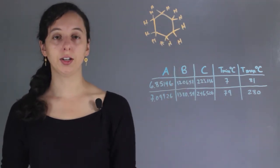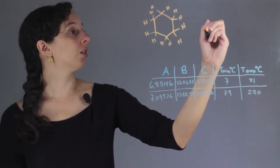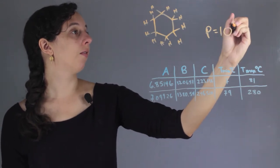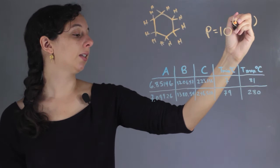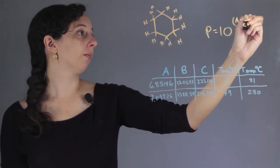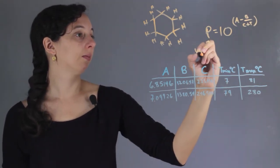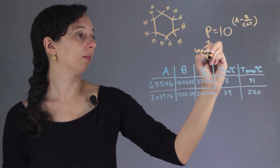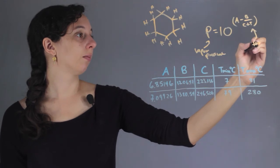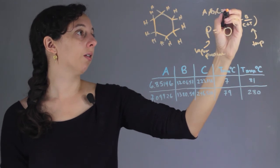The Antoine equation is used for determining vapor pressure, and the equation itself looks like this: P, vapor pressure, equals 10 to the exponent A minus B over C plus T. This P is vapor pressure, T is temperature, and A, B, and C are the coefficients that you need.